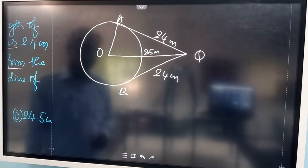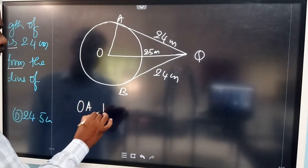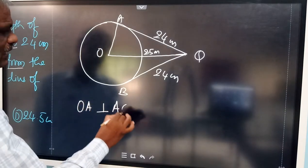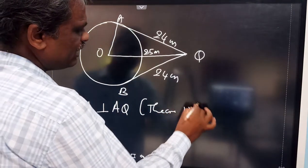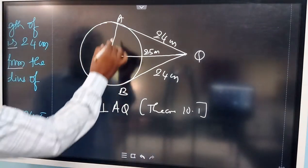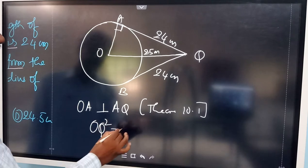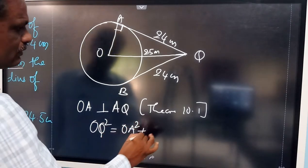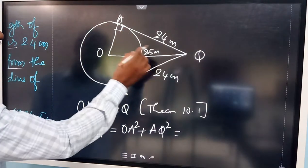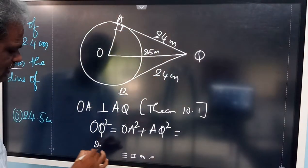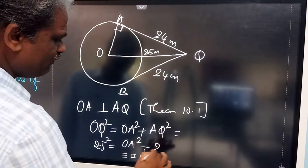The radius is OA. By Theorem 10.1, OA is perpendicular to AQ, so the angle is 90 degrees. Therefore we can apply the Pythagorean theorem: OQ² = OA² + AQ², which gives 25² = OA² + 24².